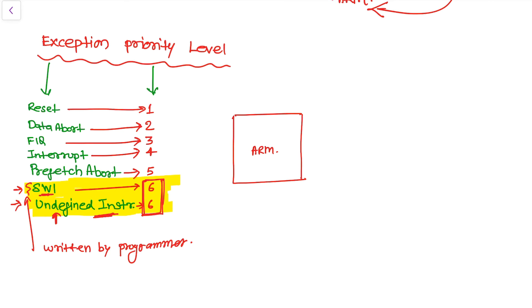This does not create a problem because SWI and Undefined Instruction would never occur simultaneously — they are orthogonal to each other. If SWI occurs, there would not be an Undefined Instruction exception, and if an Undefined Instruction exception occurs, it will not be the SWI.